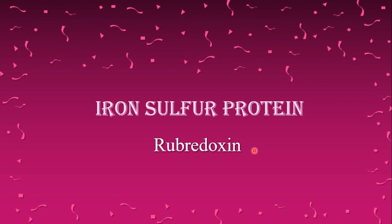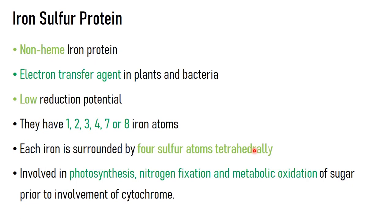In this video we will be seeing about iron-sulfur proteins. From the name itself we can say that the protein contains iron and sulfur groups. There are many types of iron-sulfur proteins based on the number of iron atoms and their structural arrangements. Today we will be seeing about rubredoxin, which contains only one iron atom. We will begin with a general introduction and structural information before going into detail about rubredoxin.